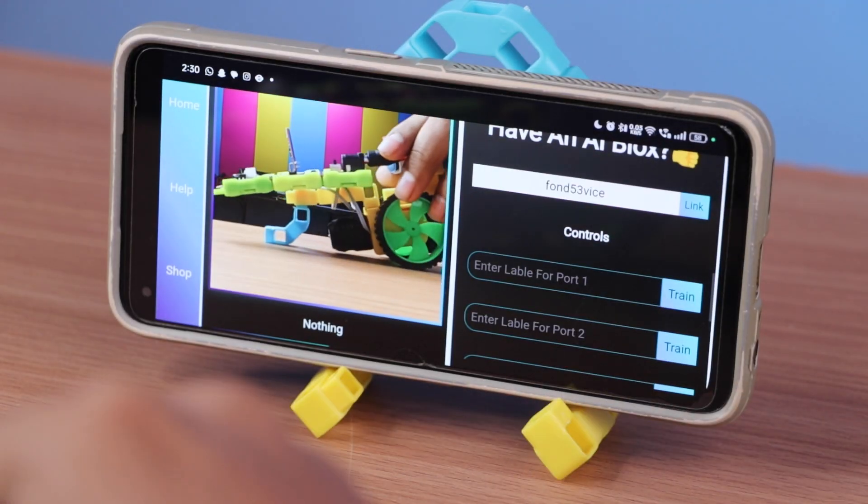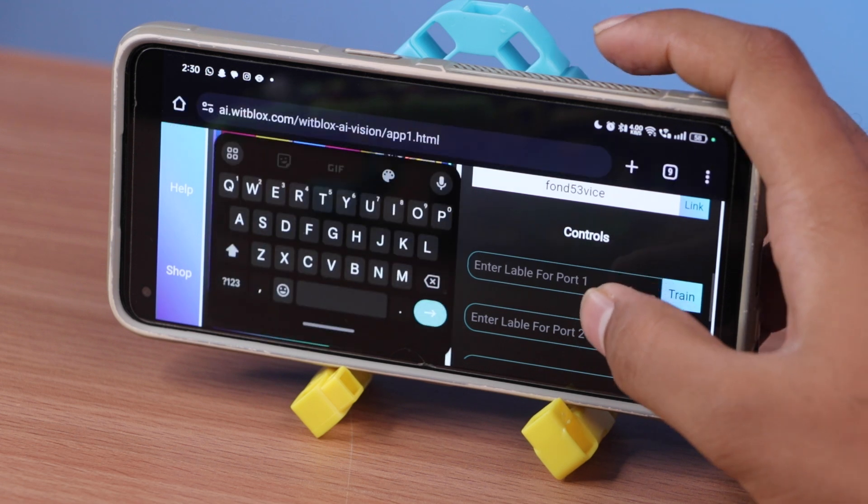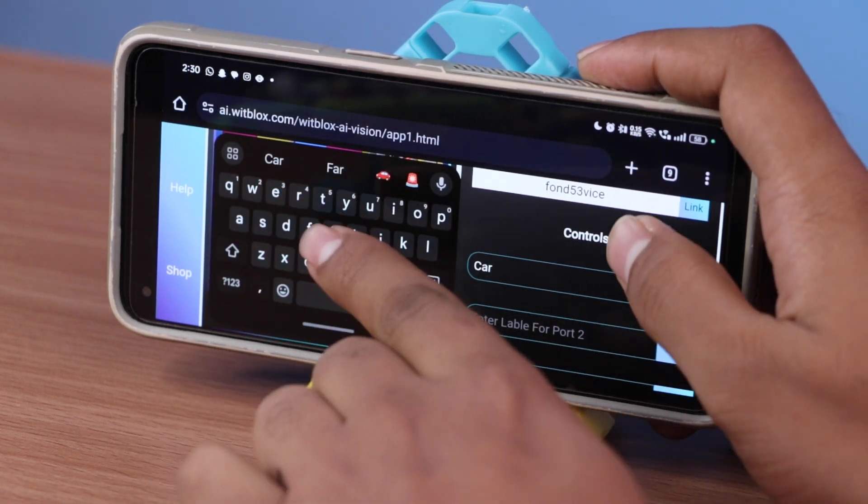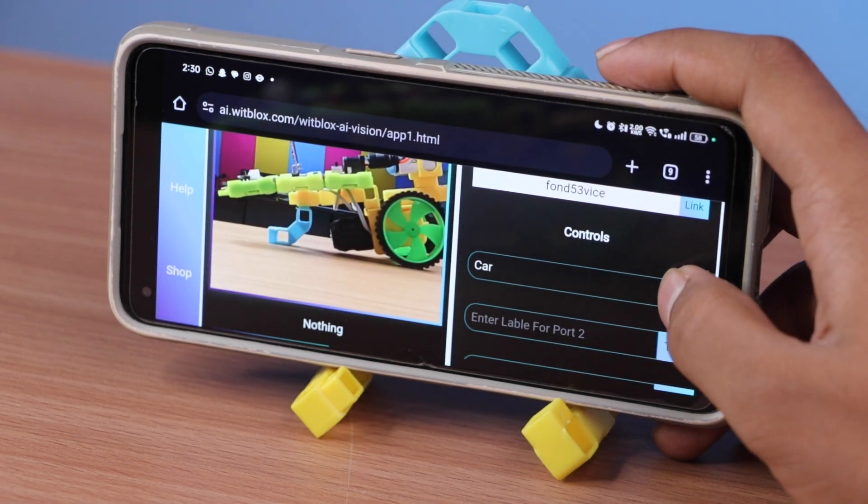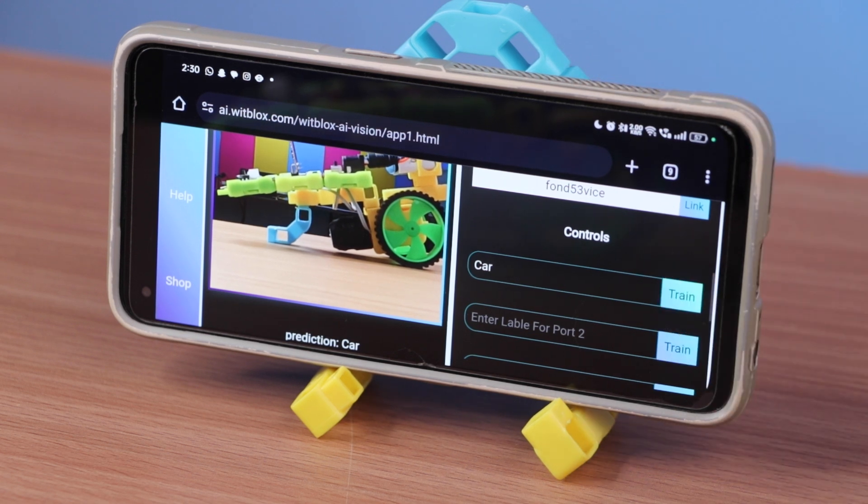For the training part, enter car in port 1. Once entered, keep a car in front of the camera and click train at least 20 times.